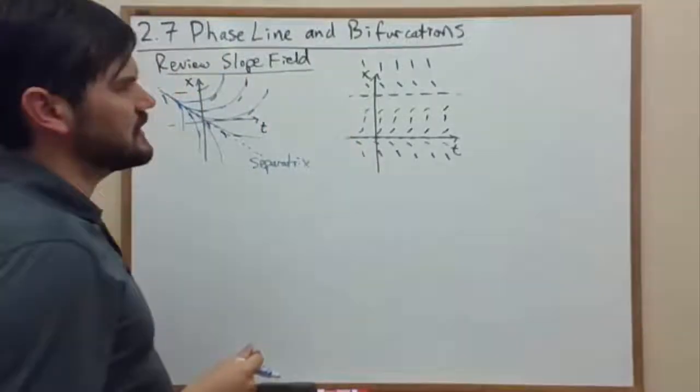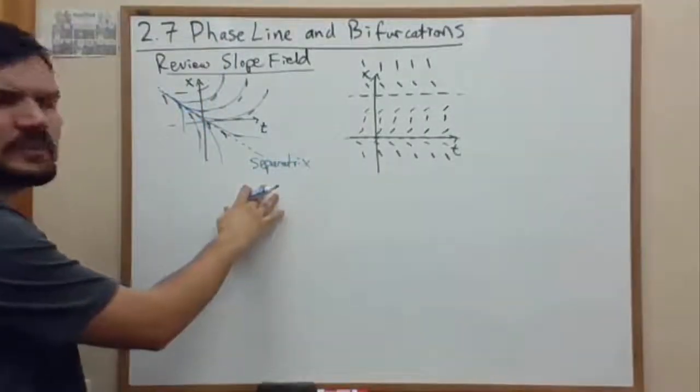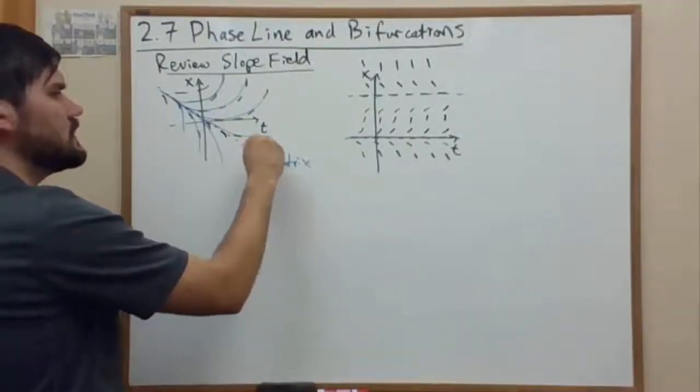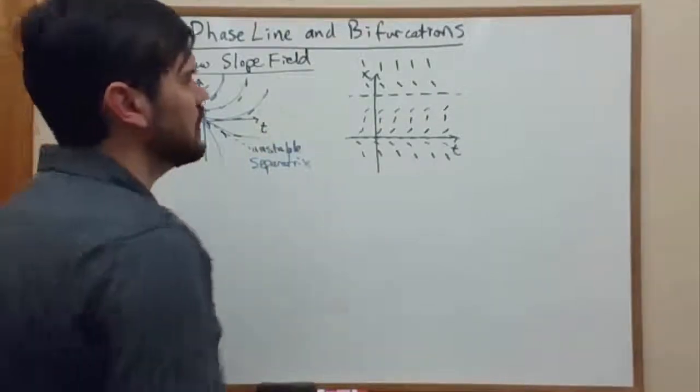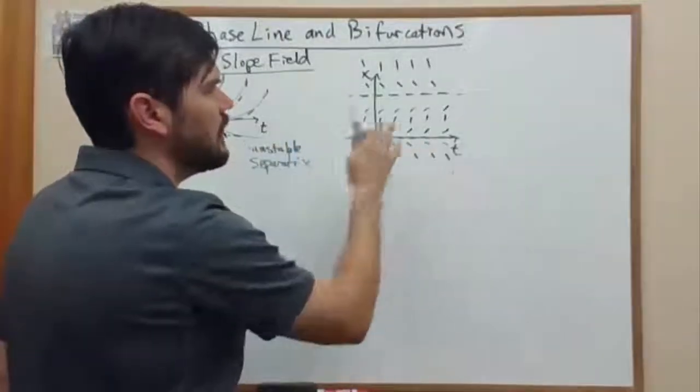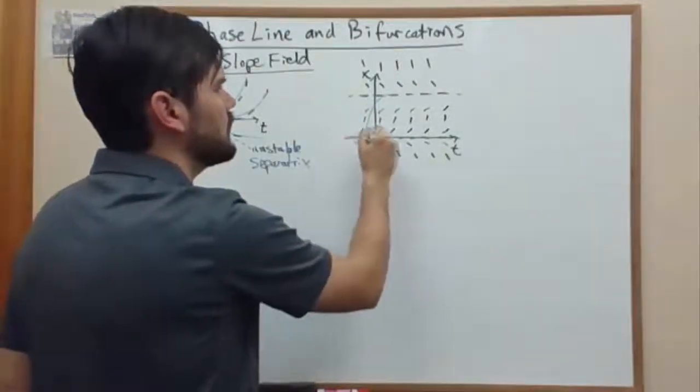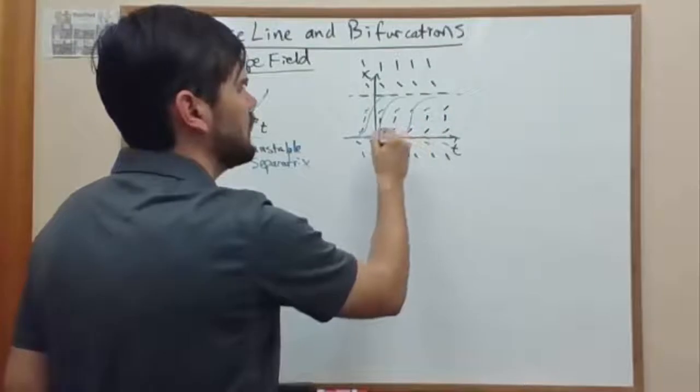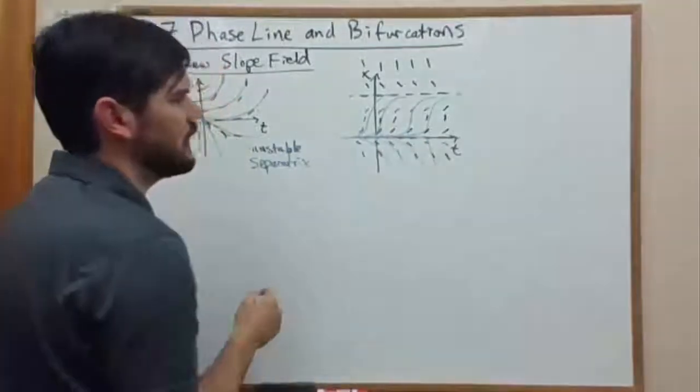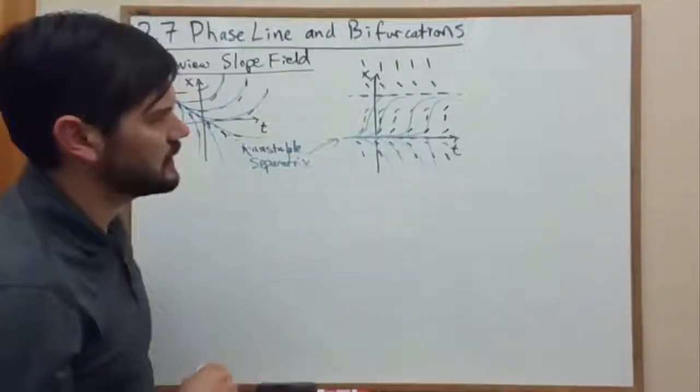But these two separatrices act differently. One acts more like our original separatrix, where it was peeling off. We call that an unstable separatrix. If we look at these two, the lower one acts more like that. As we go forward in time, we're peeling off our solutions. Something like that. So this is an unstable separatrix there, and unstable separatrix here.